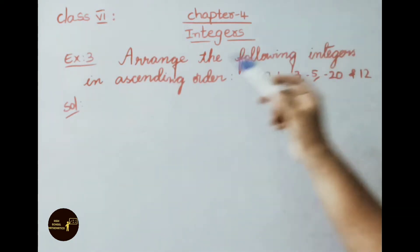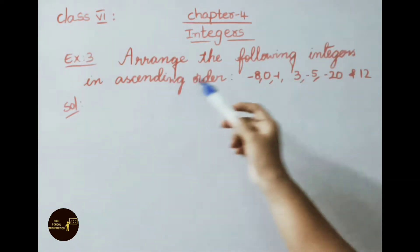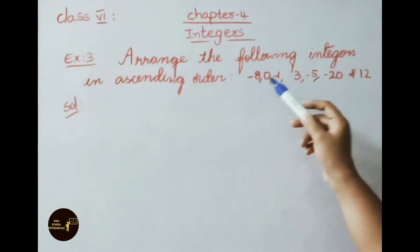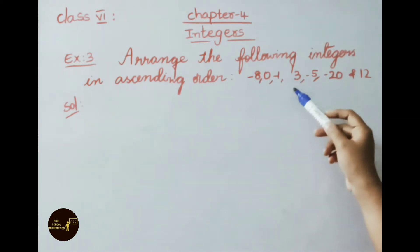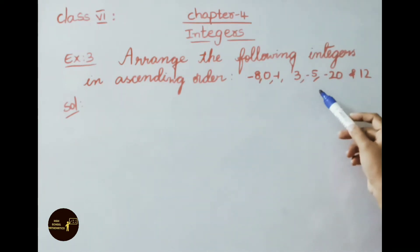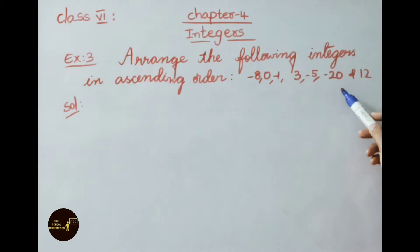Example 3: Arrange the following integers in ascending order — minus 8, 0, minus 1, 3, minus 5, minus 20, and 12. See the solution now.